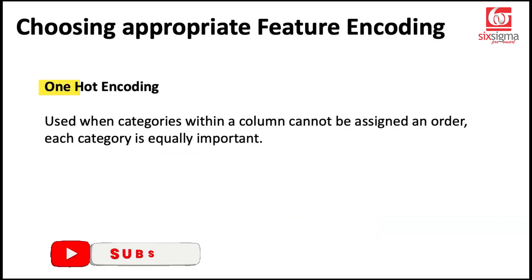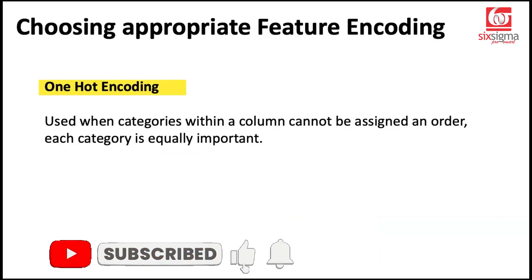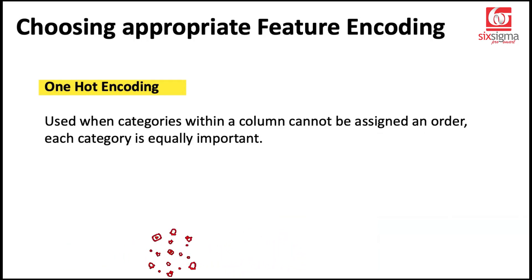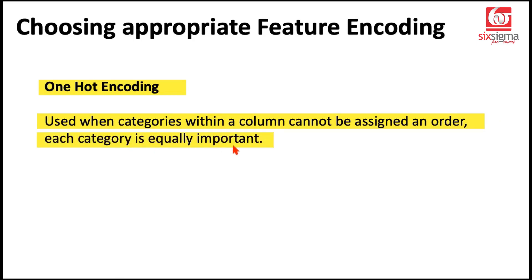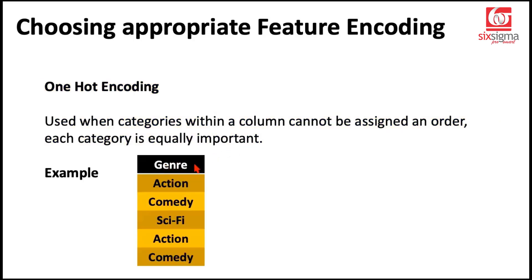Moving on to one-hot encoding. All the other encodings are primarily applicable for the independent variables or features. One-hot encoding is used when categories within a column cannot be assigned an order — there is no order that exists and each category is equally important. To look at an example, we can't say that a preference for action is less important compared to comedy or sci-fi, or that sci-fi is better than the others. It's an individual's preference.